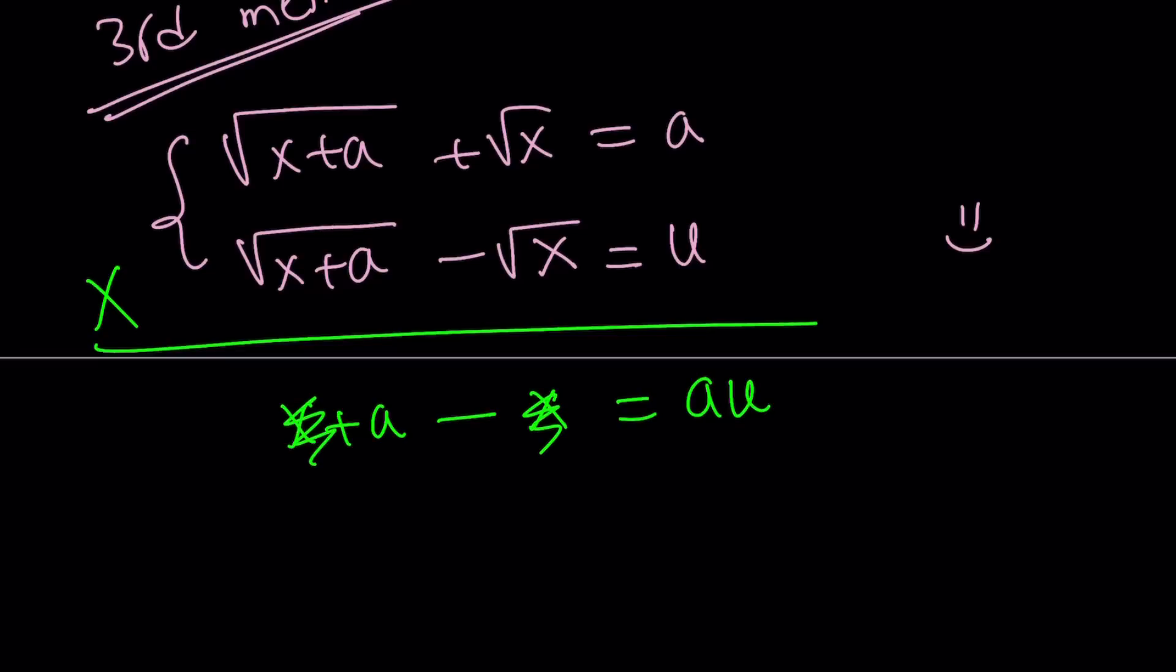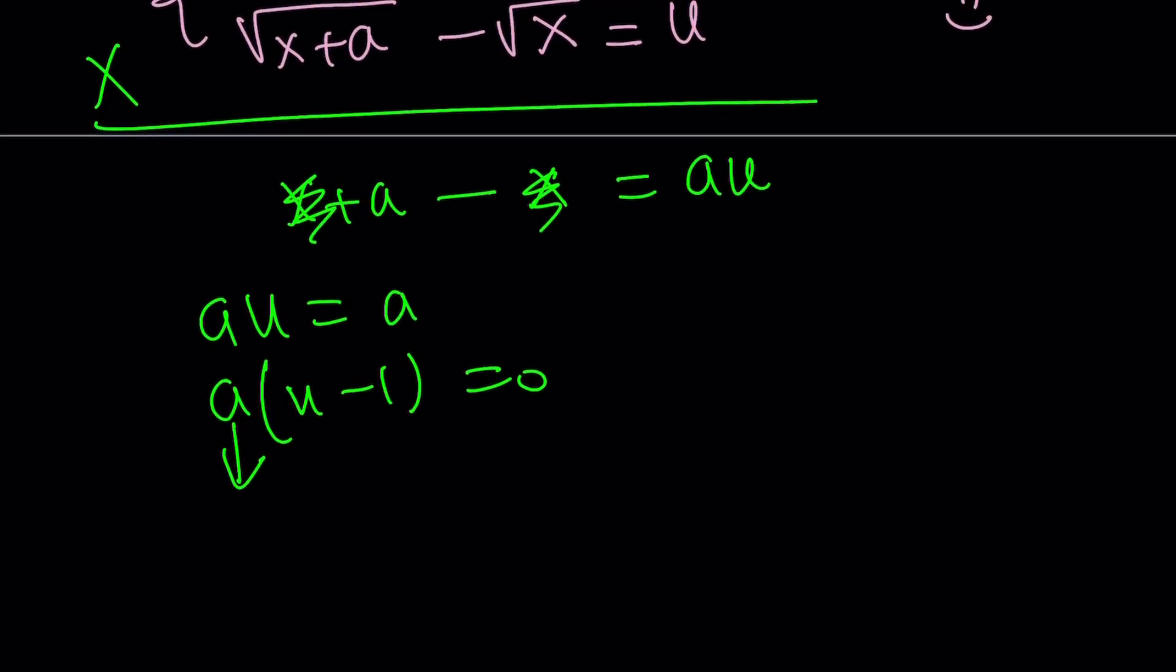You end up with a equals au. If a is equal to zero, then there's nothing much we can do. Then u is going to be zero. But if a does not equal zero, we got au equals a, a times u minus one equals zero. Or I should probably say, if u does not equal one. From here, if a does not equal zero, we get u equals one, which is what we were looking for.